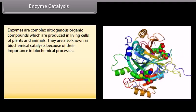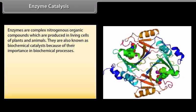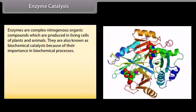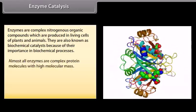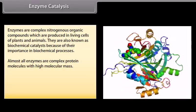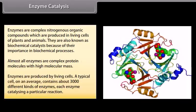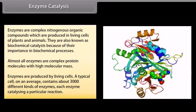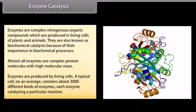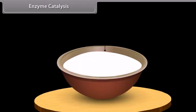Enzymes are complex nitrogenous organic compounds produced in living cells of plants and animals, also known as biochemical catalysts. Almost all enzymes are complex protein molecules with high molecular mass. A typical cell contains on average about 3000 different kinds of enzymes, each catalyzing a particular reaction — for example, conversion of milk into curd by the lactobacilli enzyme present in curd.